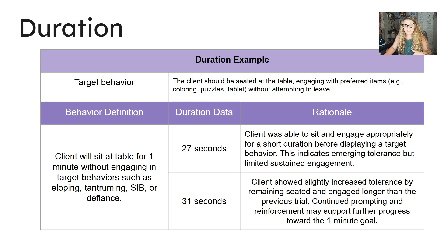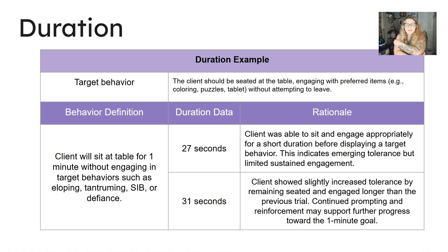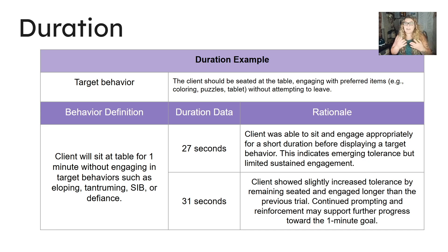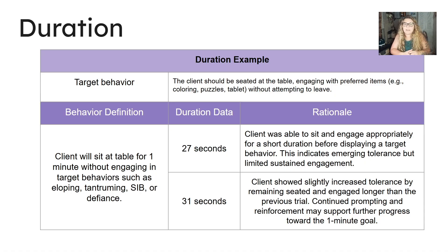Duration recording is used when a behavior occurs too frequently to count or is continuous. For example, the target behavior is the client being seated at the table and engaging with a preferred item — coloring, puzzles, or tablet — without attempting to leave. The behavioral definition is that the client will sit at the table for one minute without engaging in target behaviors such as elopement, tantrum, or defiance. In one trial lasting 27 seconds, the client sat and engaged briefly before displaying the target behavior, indicating emerging tolerance but limited sustained engagement.